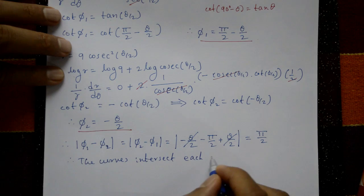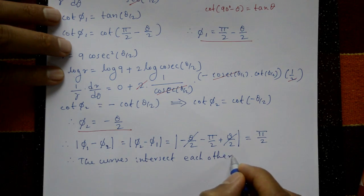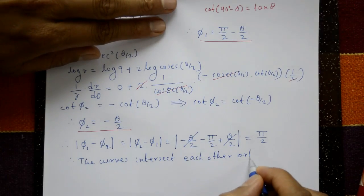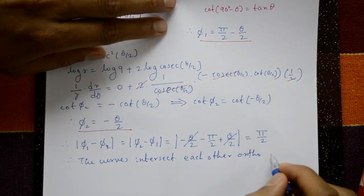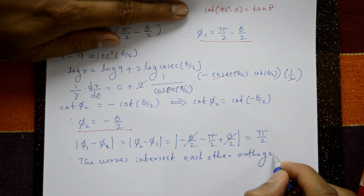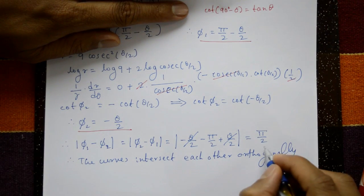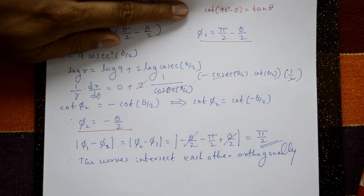The curves intersect each other orthogonally, since orthogonal means the angle of intersection is π/2.